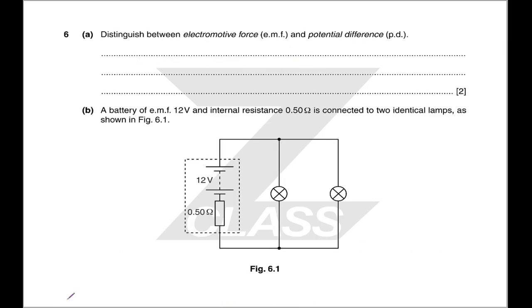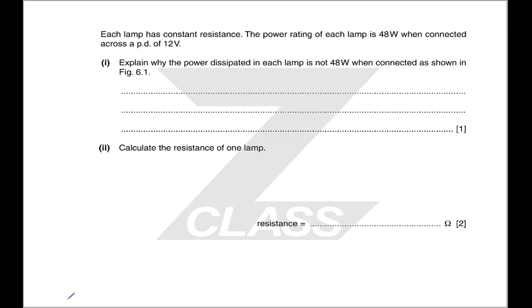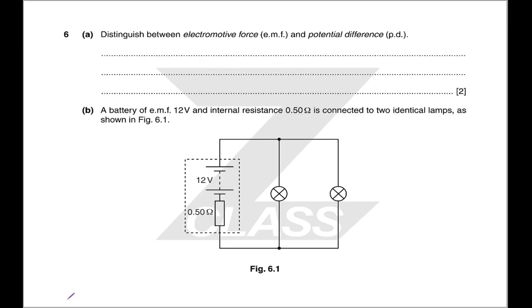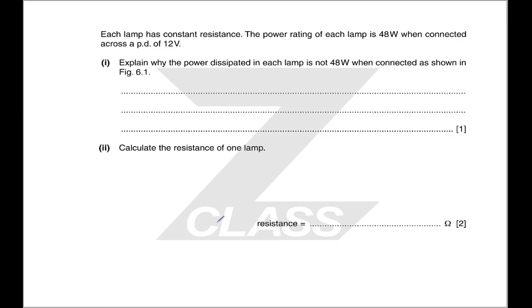Part A. Distinguish between electromotive force and potential difference. That's just a definition. We are then given a circuit with some light bulbs and an internal resistance. Each lamp has a constant resistance. It's very unrealistic, but there we go. The power rating is 48 watts. Explain why the power display is not 48 watts. So they are not, in fact, across a potential difference of 12 volts is the answer to that, because some of that voltage is essentially wasted across this resistor. So there are not actually 12 volts going through them. It's a fairly simple answer.